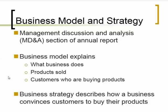A business model describes what a business does — the types of products it sells and the customers who buy them. Different businesses have different business models. Business strategy is how a business uses its model to create a competitive advantage; it deals with how businesses make customers want to buy their product rather than a competitor's. Understanding a business's model and strategy helps identify the things critical to its success. Sound financial analysis starts with a solid understanding of the business model and strategy.